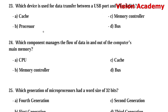Question number 23: Which device is used for data transfer between a USB port and a hard disk? Option A: cache. Option B: processor. Option C: memory controller. Option D: bus. Option D, bus, is the right answer.